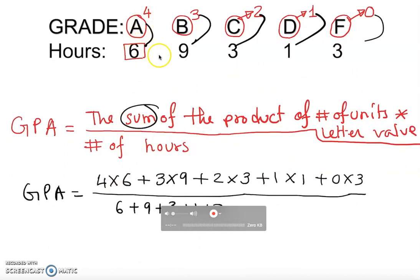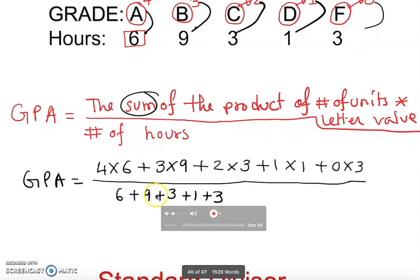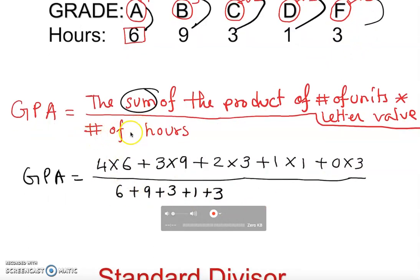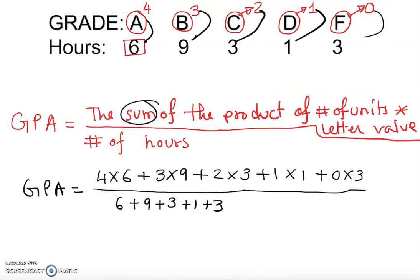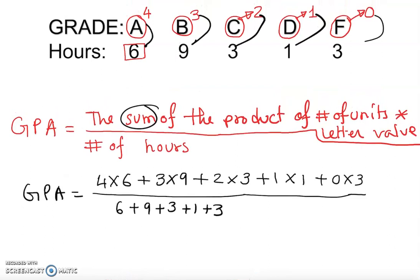Plus 1 times 1, plus 0 times 3. Okay, so I'll make sure you understand here again. So 4 times 6, plus 3 times 9, plus 2 times 3, plus 1 times 1, plus 0 times 3, that goes on the numerator. And divided by sum of the hours, total number of hours, sum of the hours. So we just add all of them, only the hours we add.